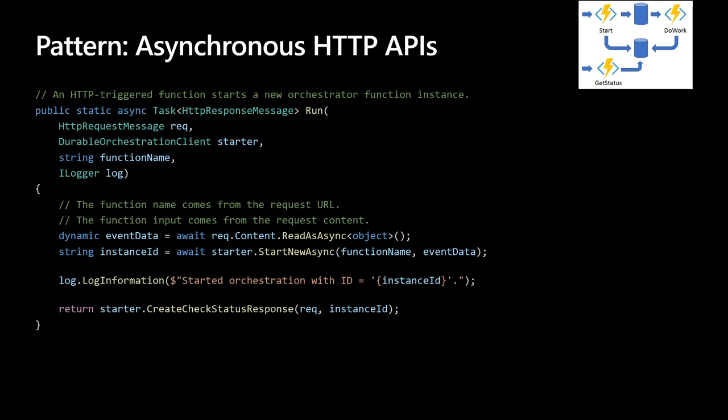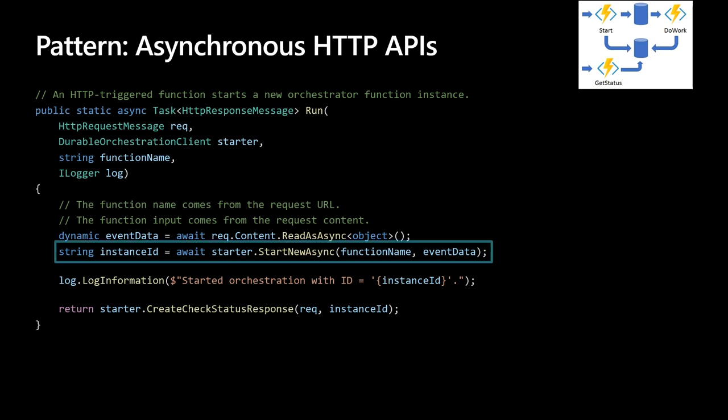The async HTTP API pattern addresses a problem coordinating the state of long-running operations with external clients. A common way to implement this pattern is by having an HTTP call trigger the long-running action, then redirecting the client to a status endpoint that the client polls to learn when the operation is finished. In our scenario, we're going to start a new async operation, and just below that, we're doing starter.CreateCheckStatusResponse, which will allow the user to poll Azure Durable Functions for updates on our process.